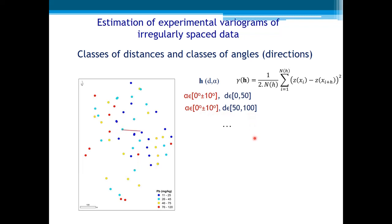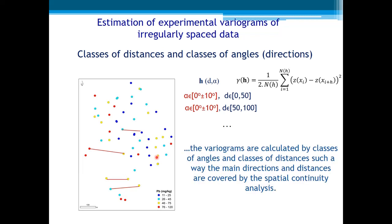Now, for example, another direction with different classes of distances, and so on. So, in short, the variograms are calculated by classes of angles and classes of distance, such a way the main directions and distances are covered by spatial continuity analysis.